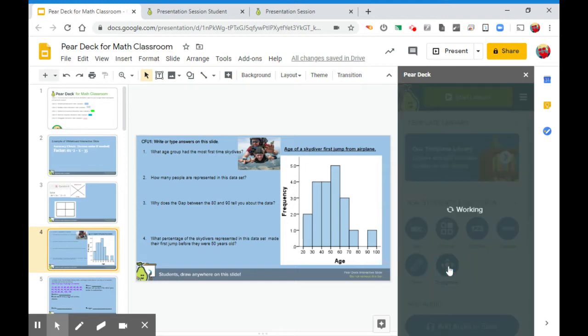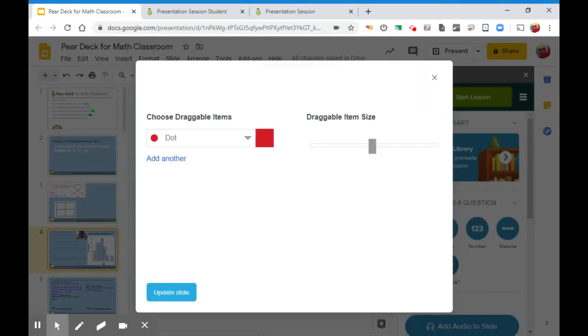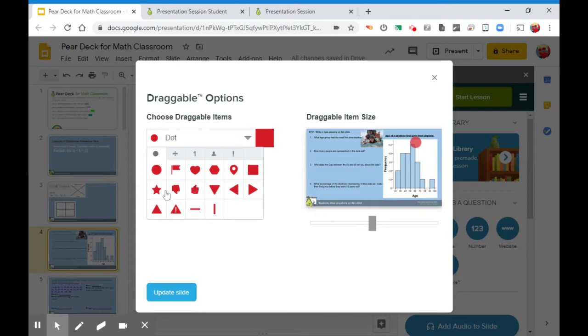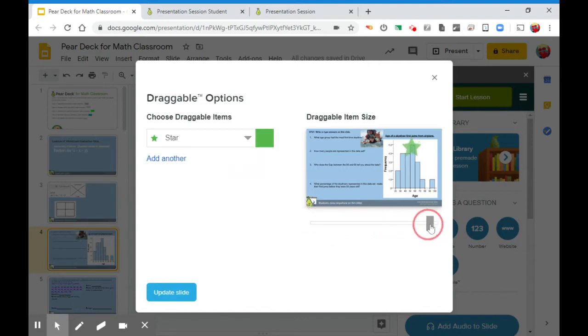So we go to draggable and I could have it be a dot. I can change this to a heart, thumbs up, a star, whatever you want to turn it into. Don't like the red, I can make a different color. I can change the size of it.